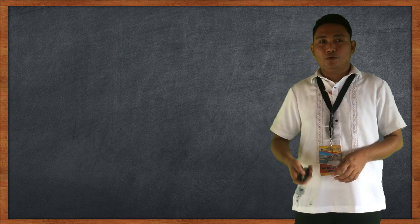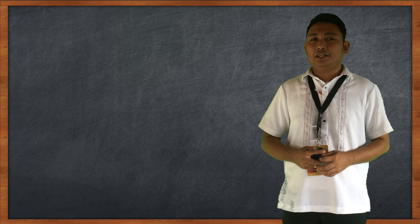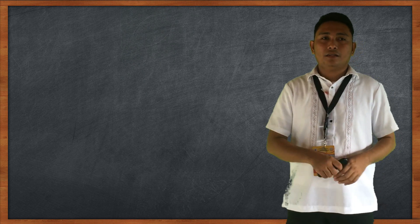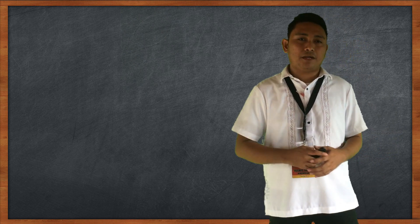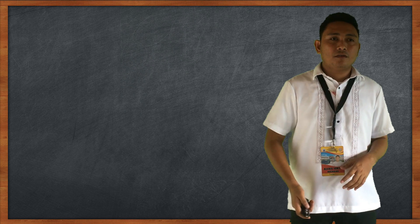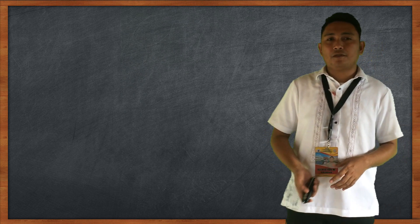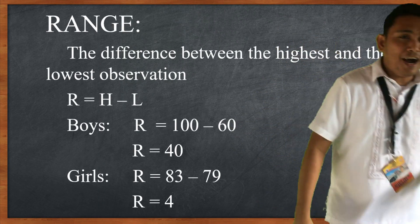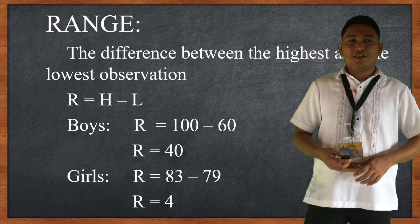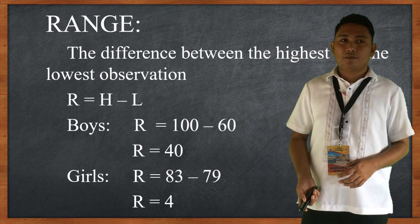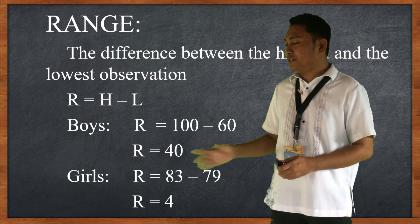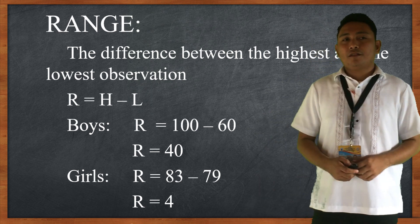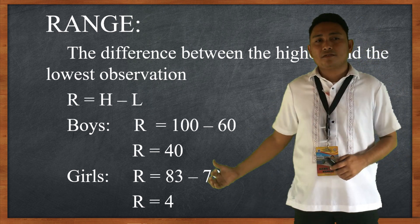Now, here is what we are going to do: the Measures of Variability for Ungrouped Data. We will interpret the scores given by the students in their mathematics quiz. First is to compute the range — the difference between the highest and the lowest observation. R equals highest score minus lowest score. For the boys, the highest score is 100 and the lowest is 60, so the range is 40.